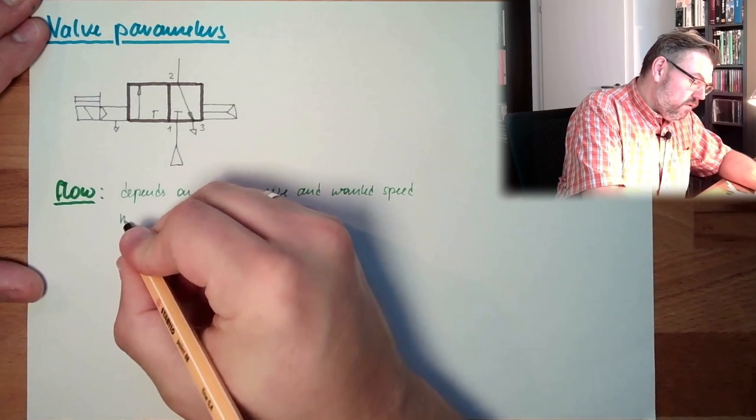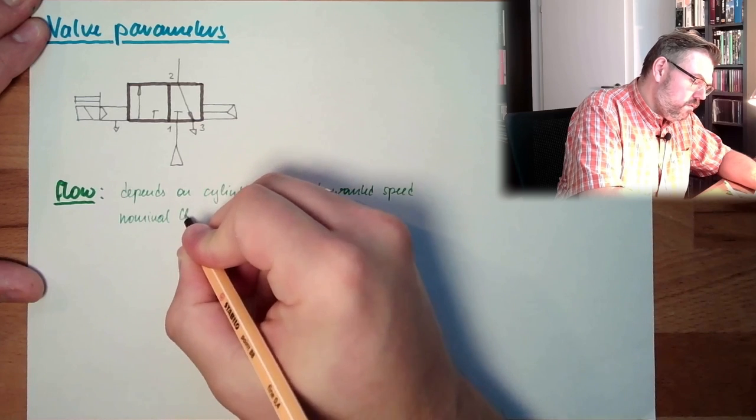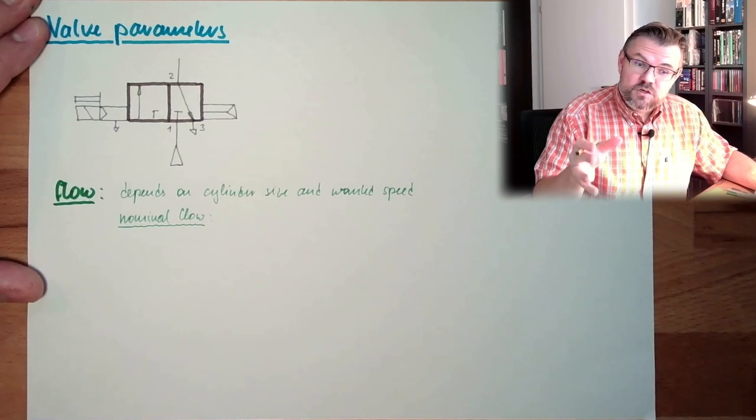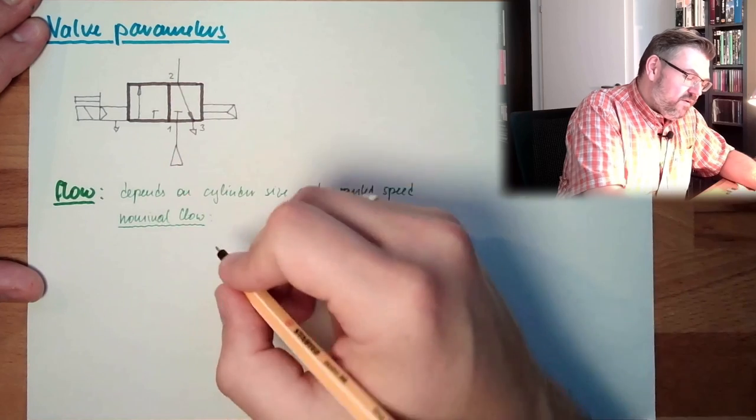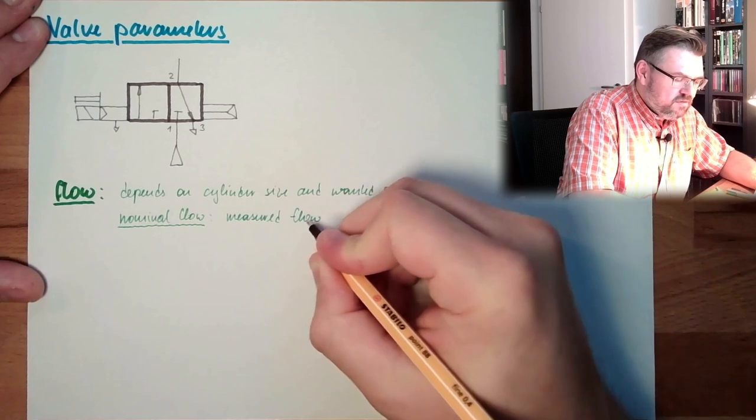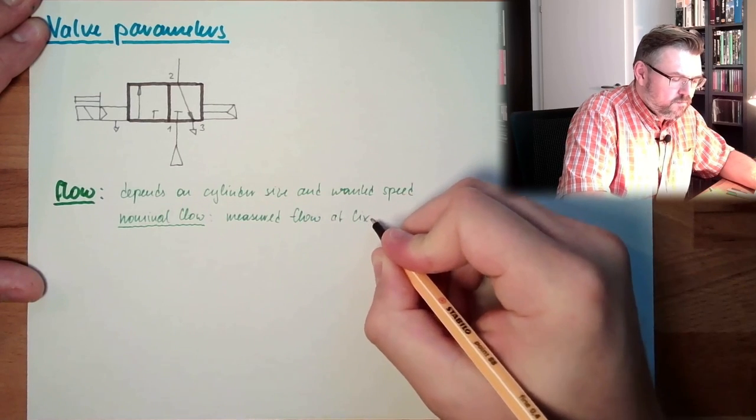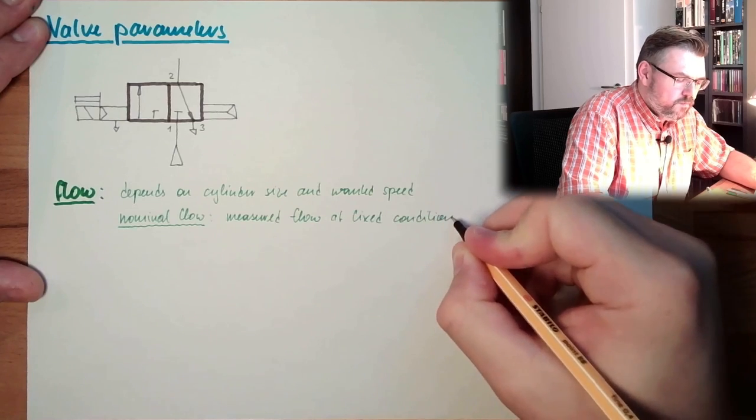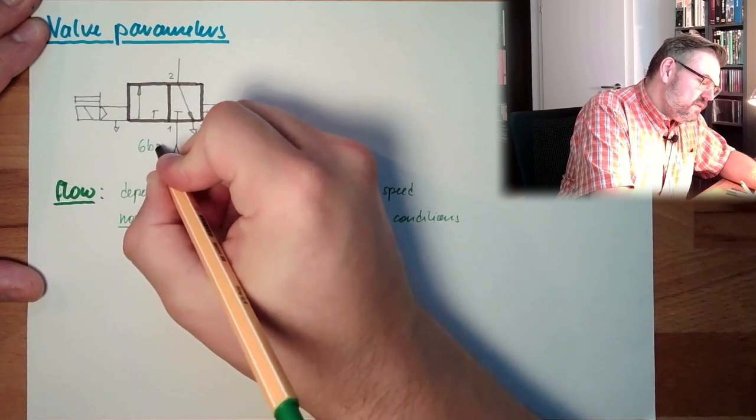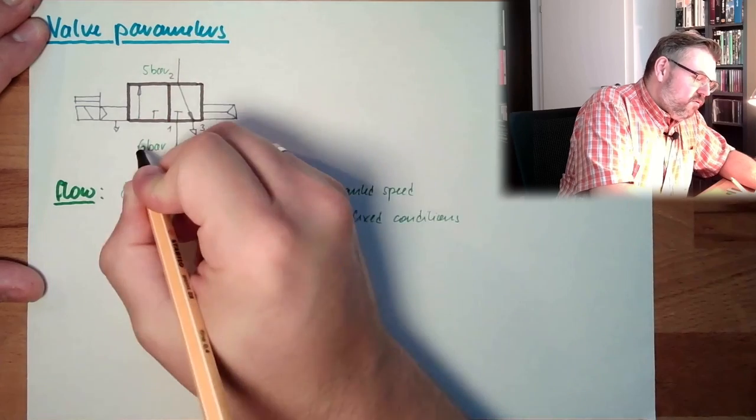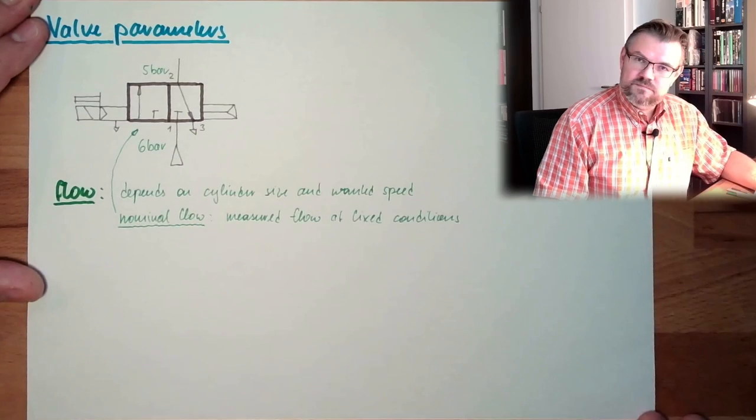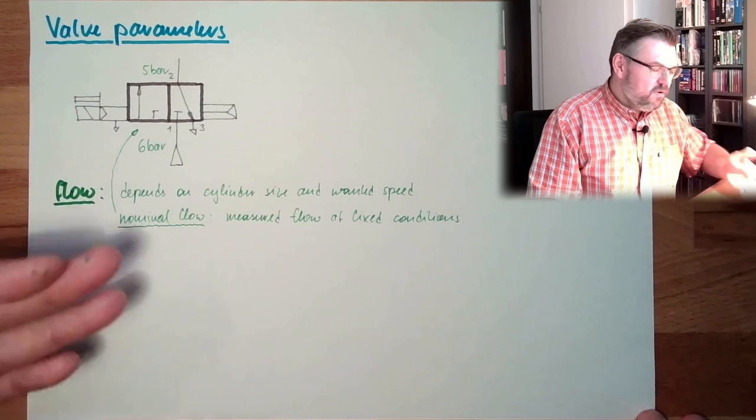Well, on one hand, there is the nominal flow. What is the nominal flow? The nominal flow is the measured flow at a fixed condition. So there are fixed conditions and we measure the flow at these fixed conditions. And these fixed conditions, in the pneumatic world, they are usually if we have in front of the valve six bar, after the valve five bar, and through the valve passing is the nominal flow. These are the conditions. If you have different levels of pressure here, then you have a different flow.